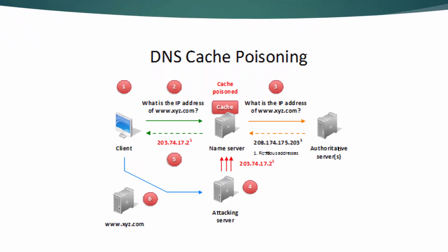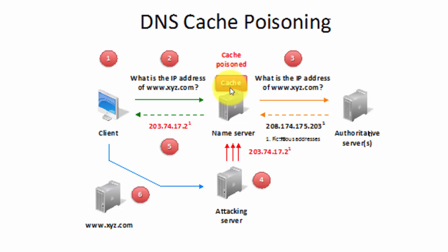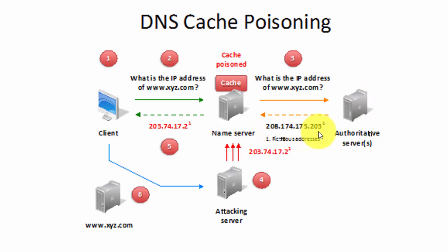Here's an example of DNS cache poisoning. I'll walk you through the stages. First you have your client. The client asks for the IP address of this domain — what is the IP address of www.xyz.com? So this name server is now cached and poisoned. As it sends the request off to the authoritative server asking for the IP address of this domain, the authoritative server will respond back with the 208.174.175.203 IP address.